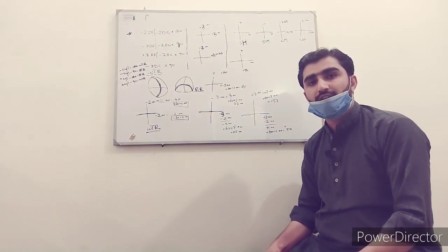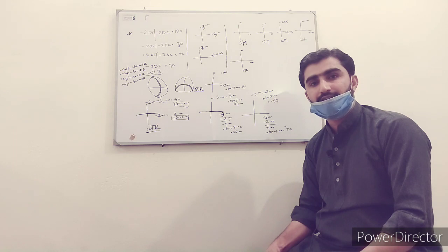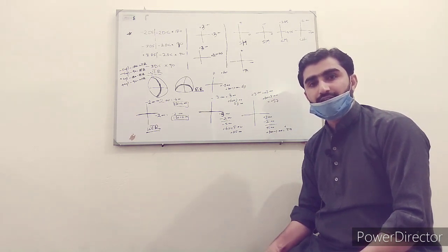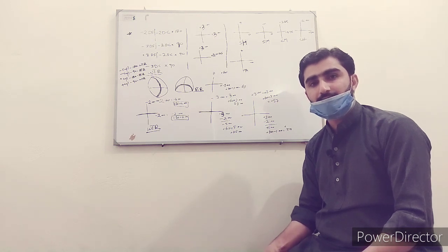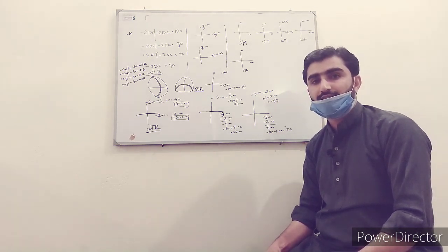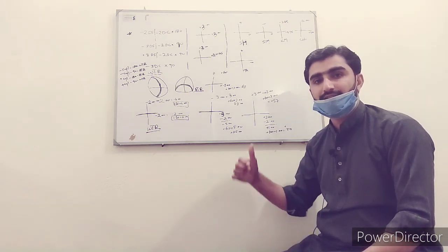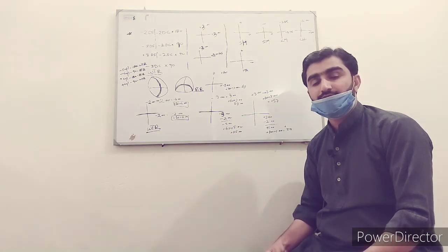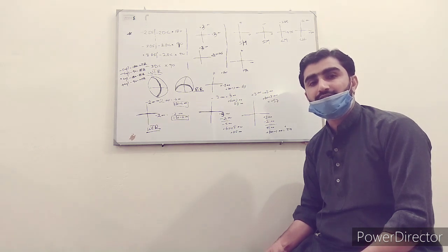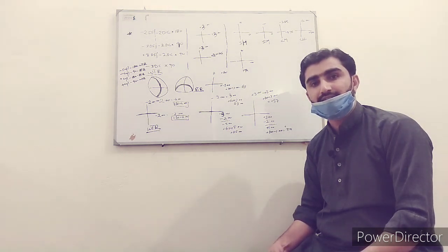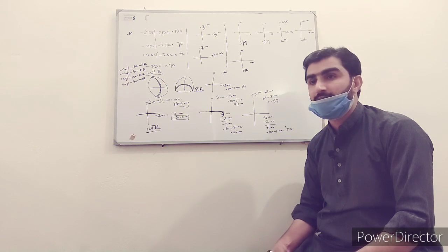Assalamu alaikum students. Today I am going to explain what is astigmatism, classification of astigmatism, and types of astigmatism. Most importantly, I will explain with-the-rule astigmatism and against-the-rule astigmatism. First of all, the definition of astigmatism: if the power at both principal axes is different, this is astigmatism.